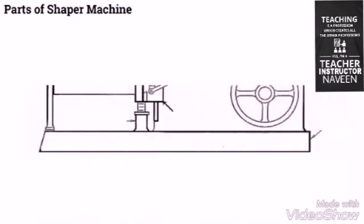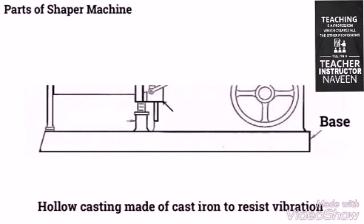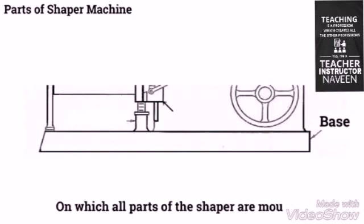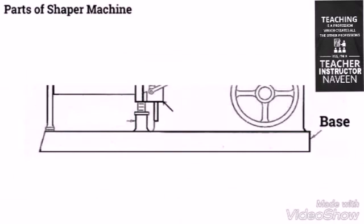The base is the necessary support required for all machine tools. The base is a hollow casting made of cast iron to resist vibration, and on which all parts of the Shaper are mounted. It can take up the entire load of the machine and the force set up by the cutting tool over the work.